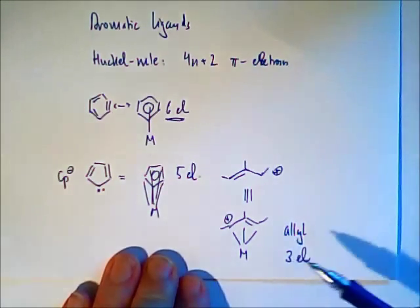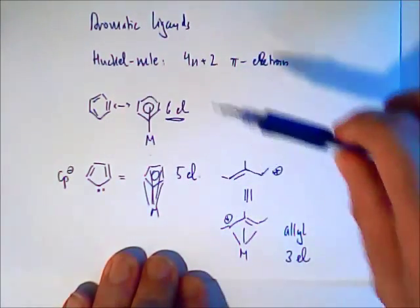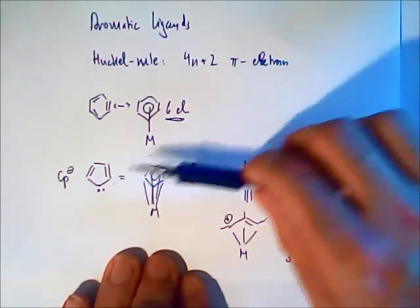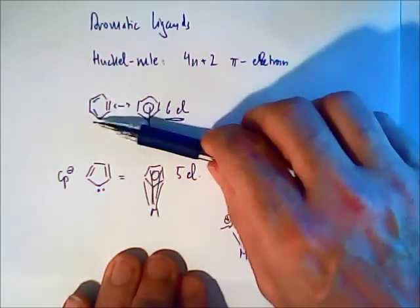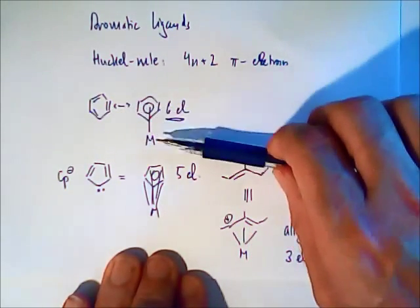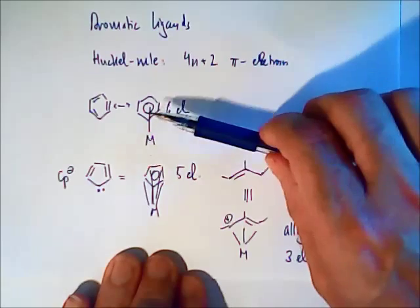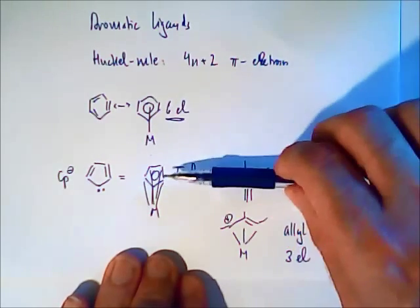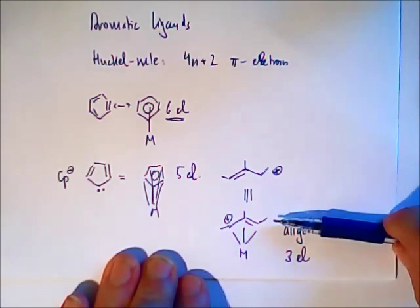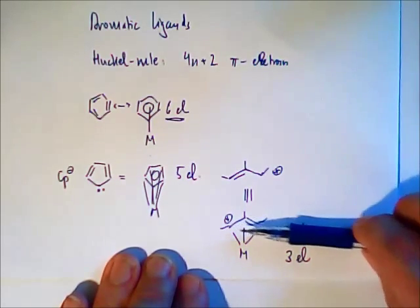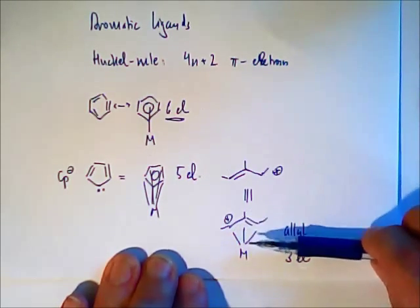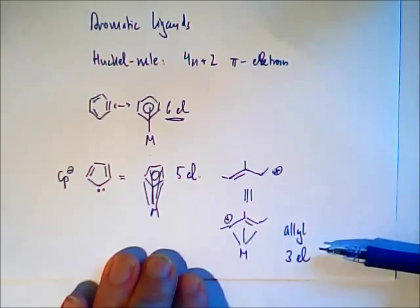Don't get confused. With these aromatic ligands which make a bond with their pi system, we count the number of atoms which are connected to the metal. So here we have 6 atoms, here we have 5, here we have 3. And we count each bond between the carbon and the metal as one electron.